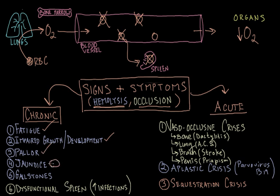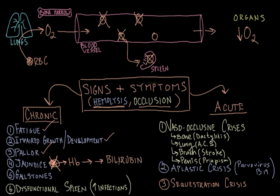Patients can also become jaundiced, adopting a yellowish hue to their skin and eyes. This happens because when you destroy red blood cells, you release the hemoglobin inside, and that hemoglobin is degraded into a molecule called bilirubin. This molecule is deposited into tissues like the skin and sclera, giving them a yellowish appearance. Having a high amount of bilirubin also predisposes these patients to gallstones. So just by looking at hemolysis, we can explain a lot of the chronic manifestations of the disease.